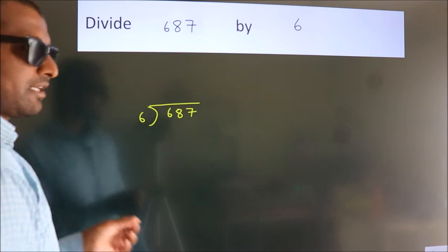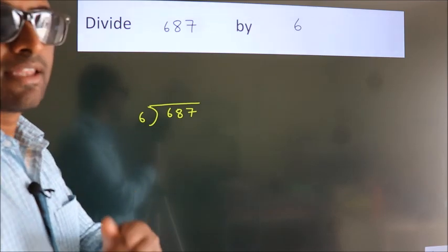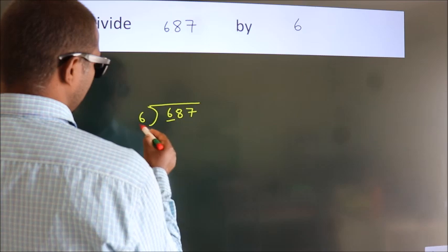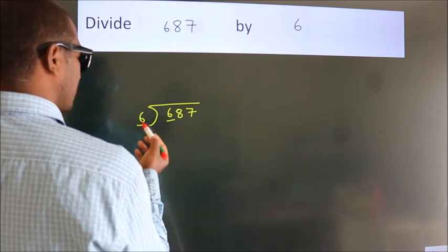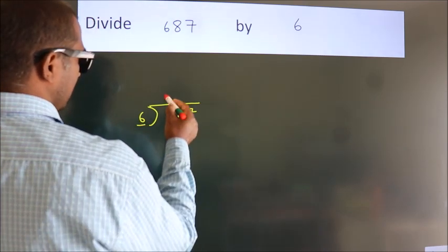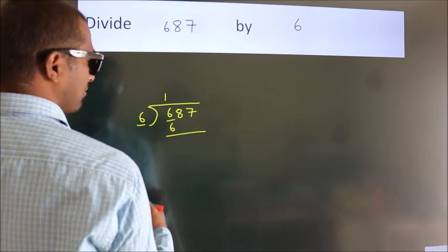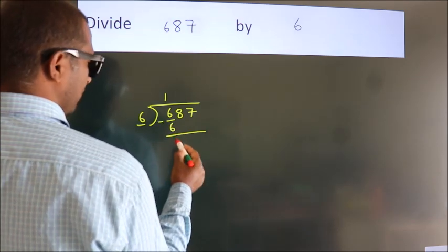This is your step 1. Next, here we have 6, here 6. When do we get 6? In the 6 table. 6 once is 6. Now we should subtract. We get 0.